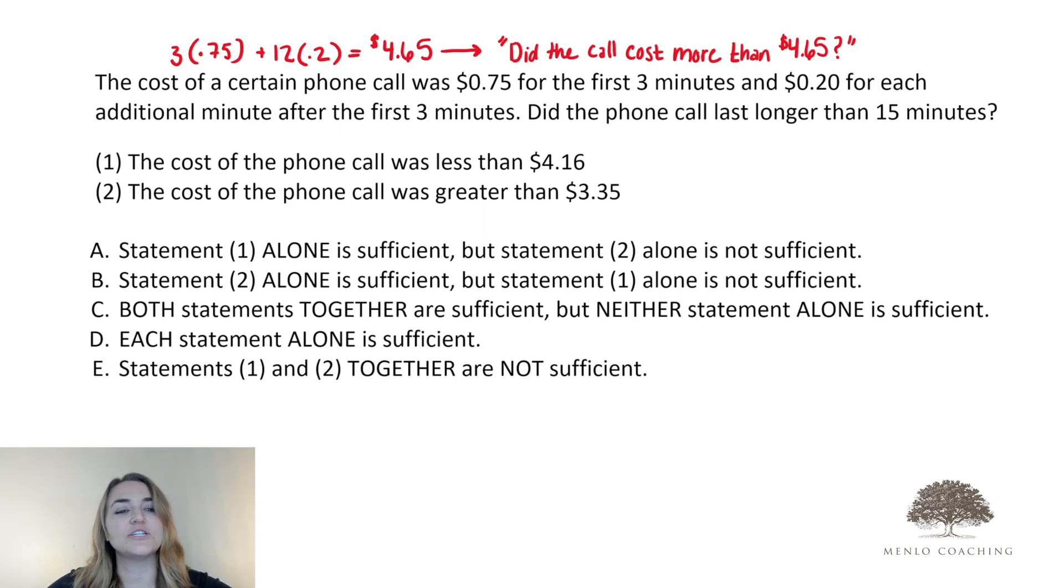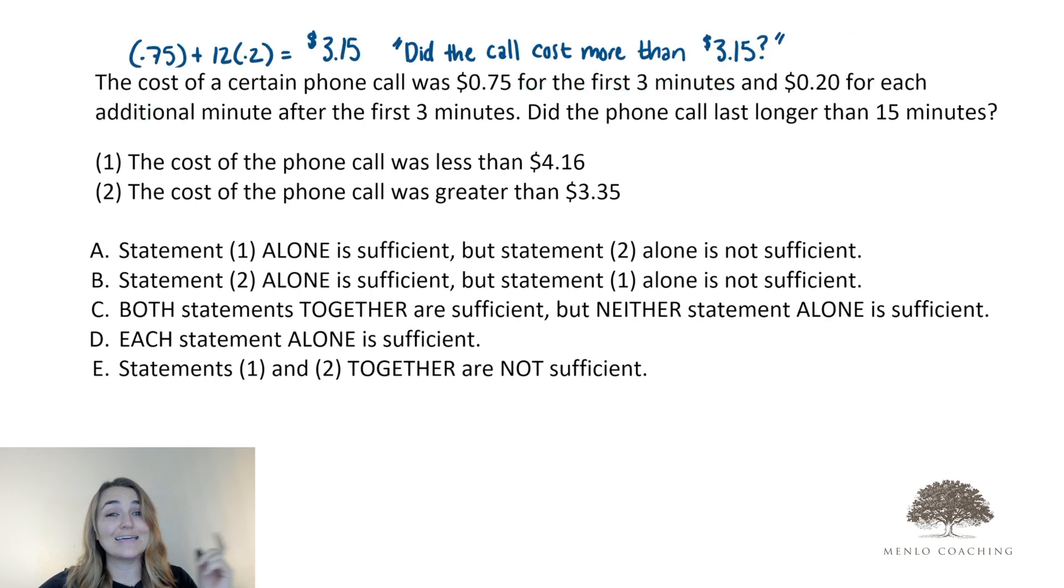Yeah, we have 20 cents for each additional minute, but that cost was given to us as 75 cents for the first three minutes. Not each of the first three minutes, not per minute for the first three minutes, but in total for that first three minutes, which means our math should actually look a little more like this. 75 cents plus 12 times 0.2 gives us $3.15 or the question stem, did the call cost more than $3.15?